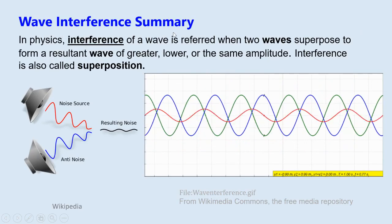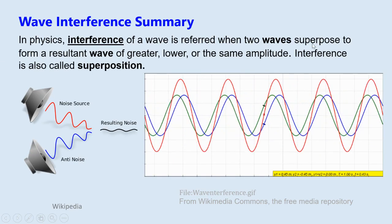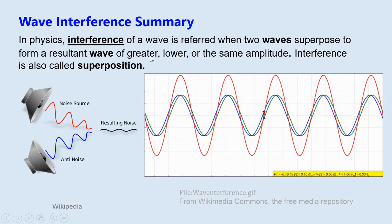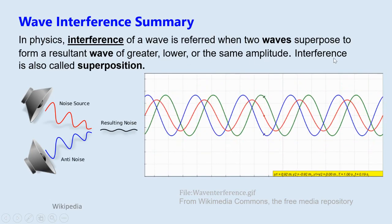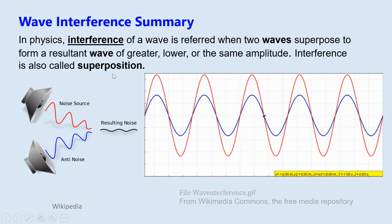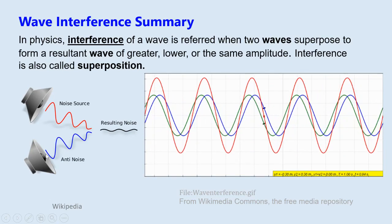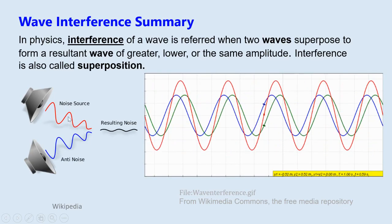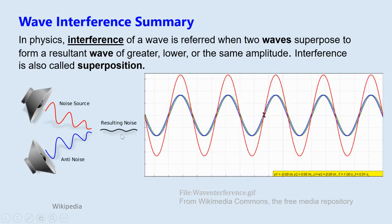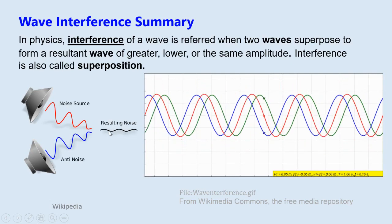Wave interference summary: In physics, interference of a wave refers to when two waves superpose to form a resultant wave of greater, lower, or the same amplitude. Interference is also called superposition. As an example of noise cancellation: a noise source and an anti-noise source that is out of phase are combined, producing a reduced noise as the resultant — a very low amplitude output.